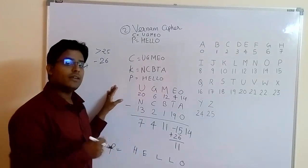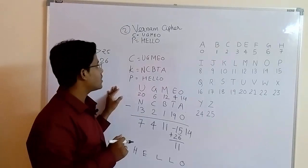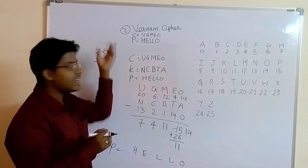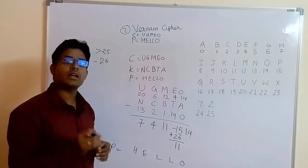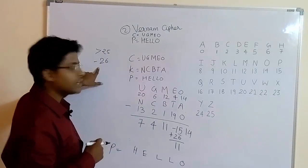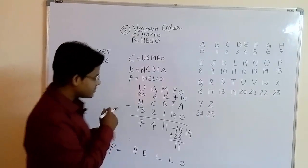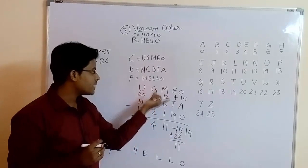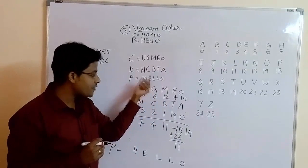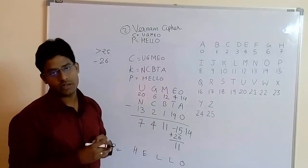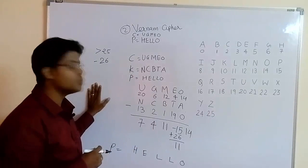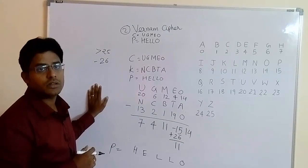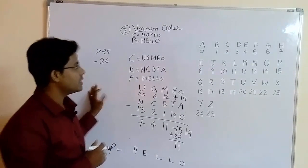So what are the two main rules in this Vernam cipher technique? First, when you add during encryption and get a number greater than 25, subtract 26 from it. Second, during decryption, when you get a negative number by subtracting the key from the ciphertext, add 26 to it. Just remember these two rules and you will be able to easily solve examples using the Vernam cipher method.